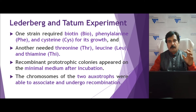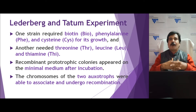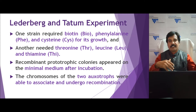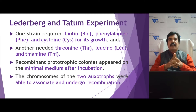Growth could only occur if the two auxotrophic chromosomes had recombined, carrying all the genes necessary for growth — that is, the biotin, phenylalanine, cysteine, threonine, leucine, and thiamine genes. They found that there was growth, meaning genetic transfer had indeed occurred.